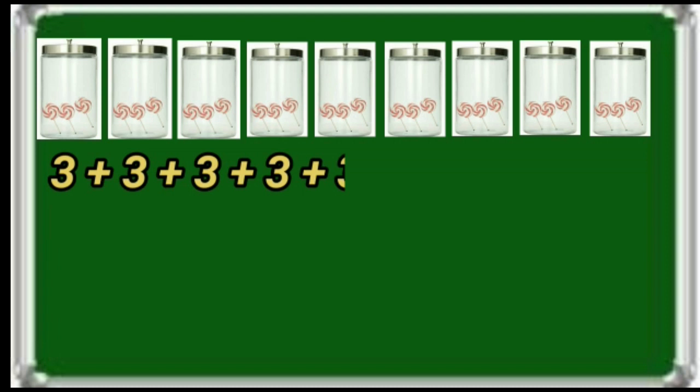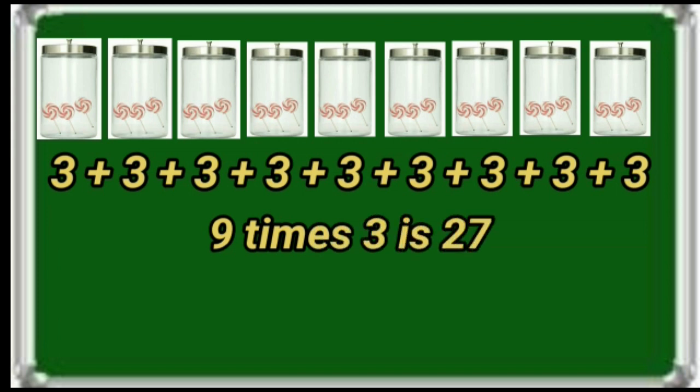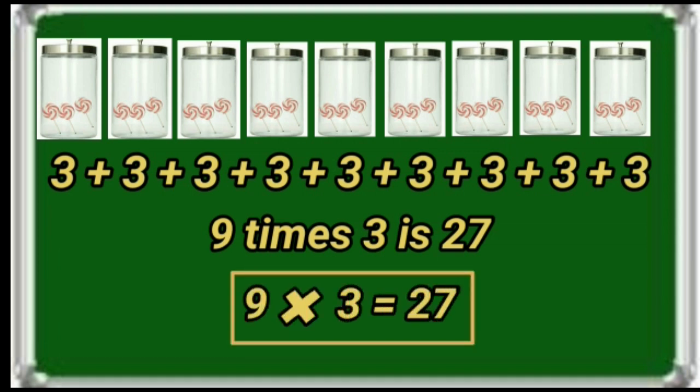Now say children — each jar has how many lollies? Yes, right — 3 lollies. Here total how many jars are there? 9 jars. Here 9 times 3 is repeating. So 9 times 3 is 27. That can be written as 9 3's = 27.